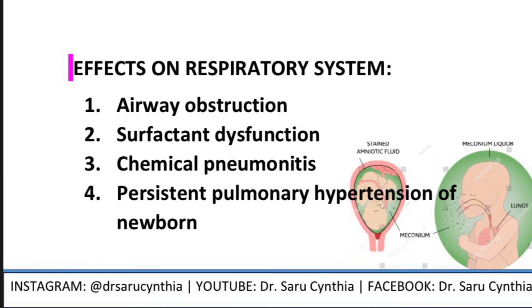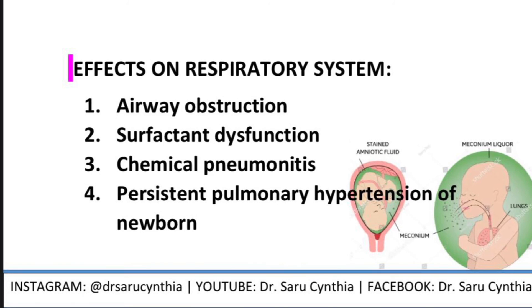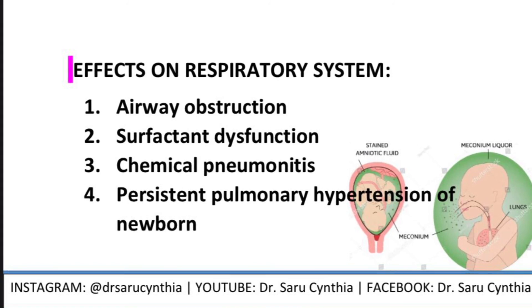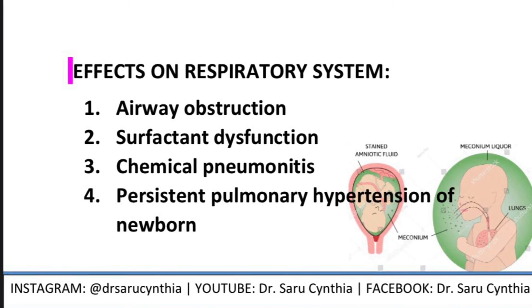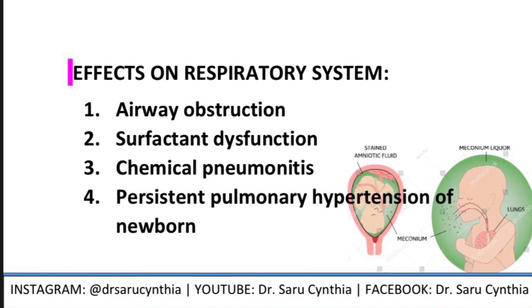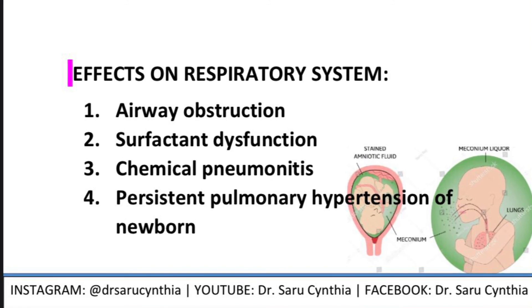Airway obstruction can either be complete or partial. With complete obstruction, it results in atelectasis. With partial obstruction, there is air trapping, hyperdistension of alveoli, and sometimes rupture causing pneumothorax. The second effect is surfactant dysfunction — meconium has been shown to deactivate surfactant and inhibit surfactant synthesis, resulting in diffuse atelectasis.